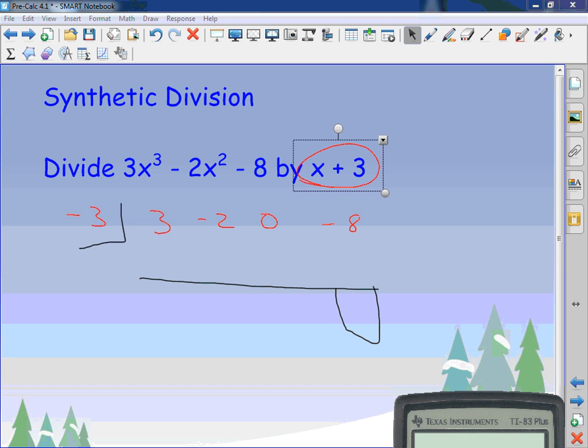Now for this, for the synthetic division, I bring the first one down always. 3. Negative three times three gets me negative nine. What's negative two and negative nine? Negative eleven. What's negative three times negative eleven? Thirty-three. Zero and thirty-three is thirty-three. Negative three times thirty-three is negative ninety-nine. And I put it together. It's negative one oh seven.